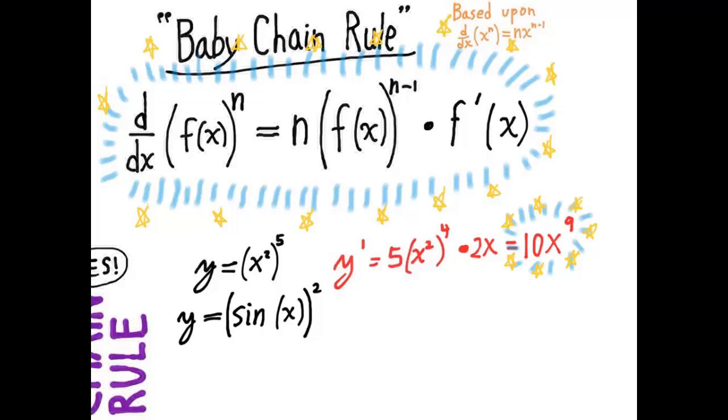So I have y equals sine of x squared. The derivative is going to be 2 times sine of x, then quickly I'm going to write times 2 times sine of x times cosine of x.